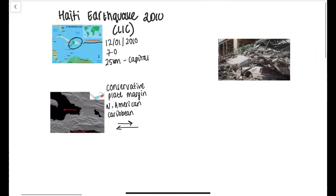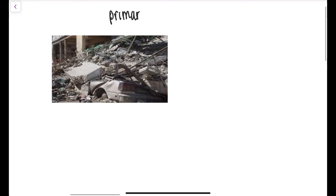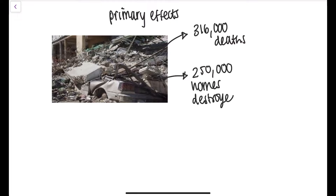In terms of primary effects, there was widespread damage across Haiti. The earthquake left 316,000 people dead and 250,000 homes were destroyed, in addition to ports and airports being badly damaged. Hospitals and schools were also badly damaged, which led to problems later down the line. The main prison was also destroyed, leading to 4,000 inmates escaping.